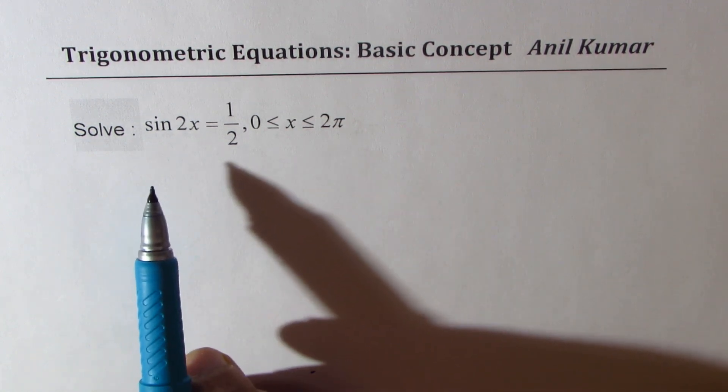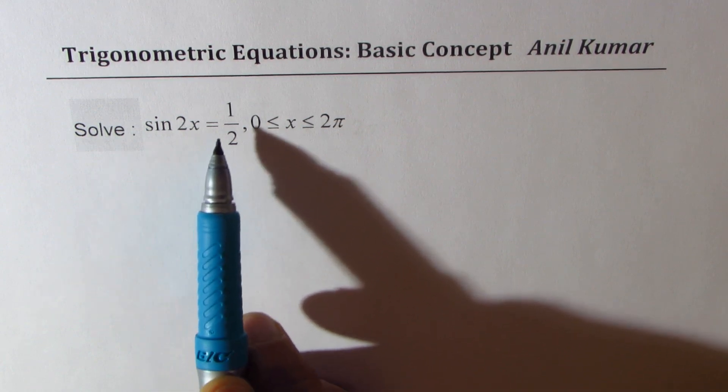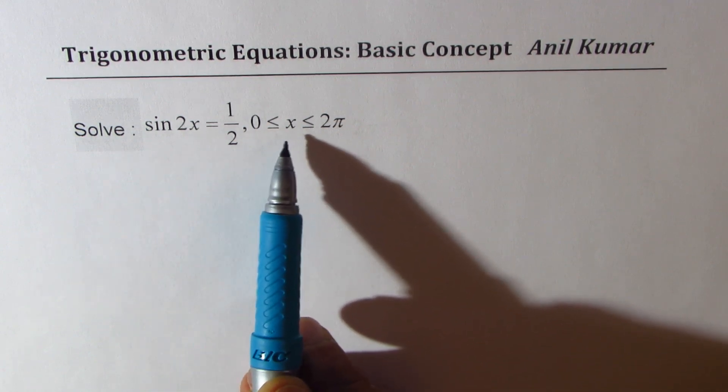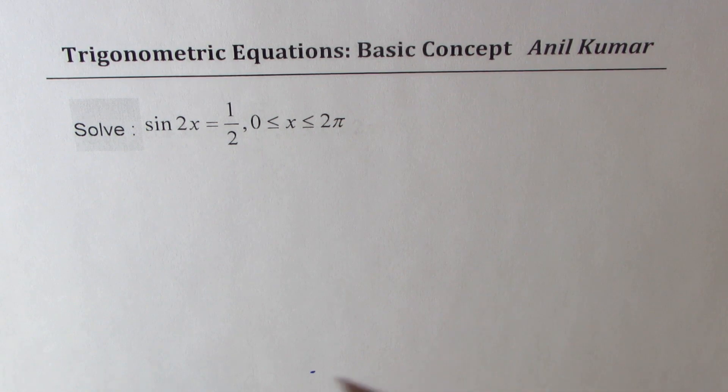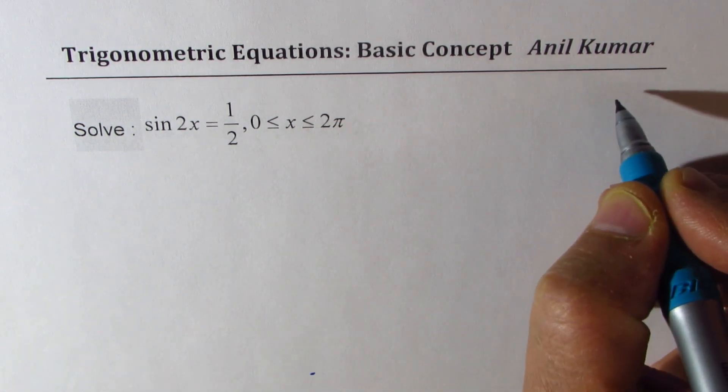We need to solve the equation sine 2x equals to half when x is between 0 to 2 pi. Now what you need to remember here is a few basic things.